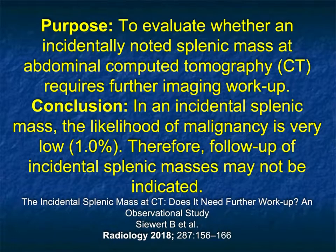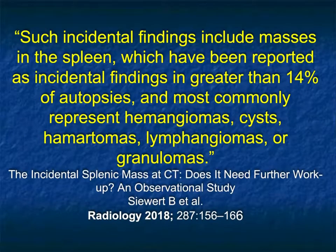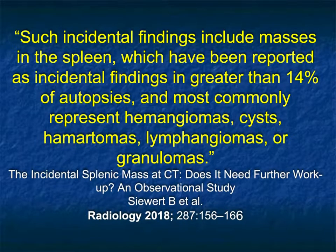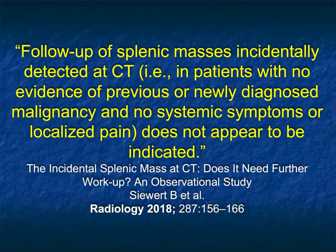If you're concerned for infection, that often relates to the clinical history or a concerning appearance, in which case biopsy or splenectomy can be done. But we're really trying to limit what is done to the patient. Such incidental findings, including masses in the spleen, have been reported as incidental findings in greater than 14% of autopsies, most commonly representing hemangiomas, cysts, hematomas, lymphangiomas, or granulomas. Benign lesions make up the high majority of splenic lesions, so be careful not to over-call them.